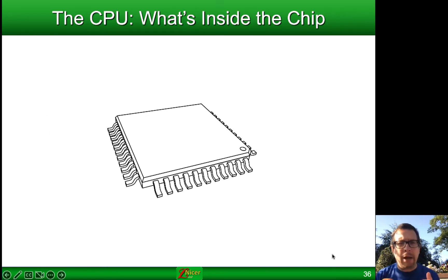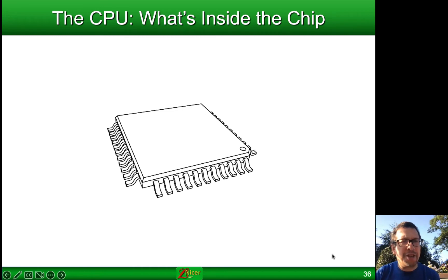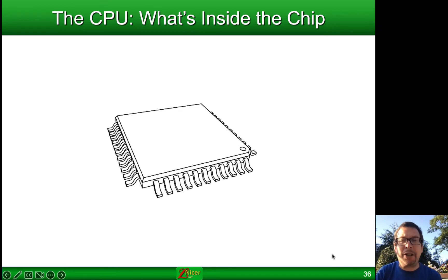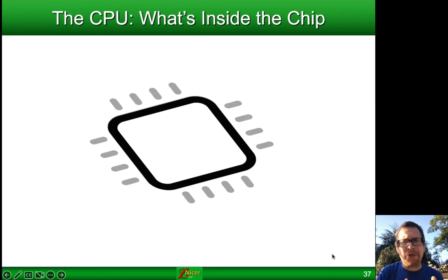We want to start with a perspective: the magic for microprocessors happens inside of the chip, but normally you don't see what's inside. You don't see the hardware inside. What I've got on screen right here is an outline of a microprocessor or microcontroller — basically a square rectangle — and the silicon inside is buried and covered because it's fragile. On the outside of the chip you have metal pins that allow signals to come in and out. We're going to look at it from an abstracted perspective, with the outline of the chip and the pins on the outside that allow things to come in and out.